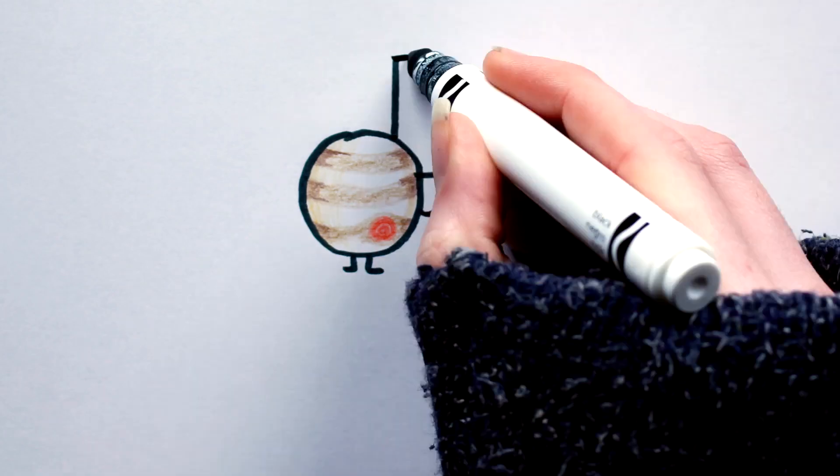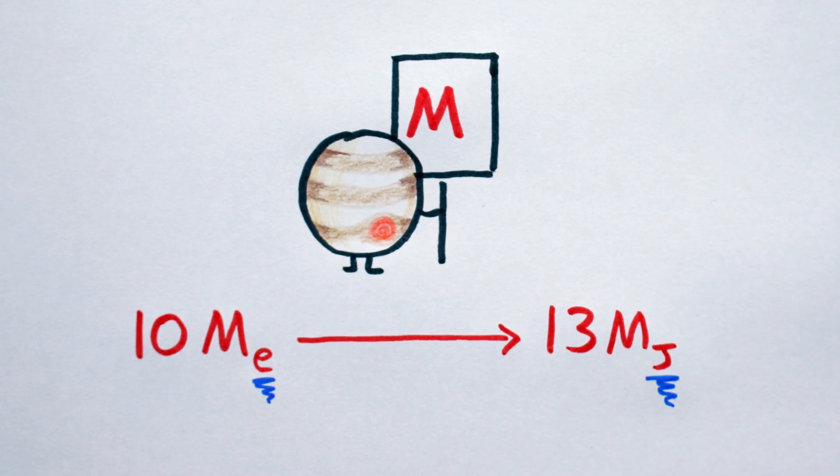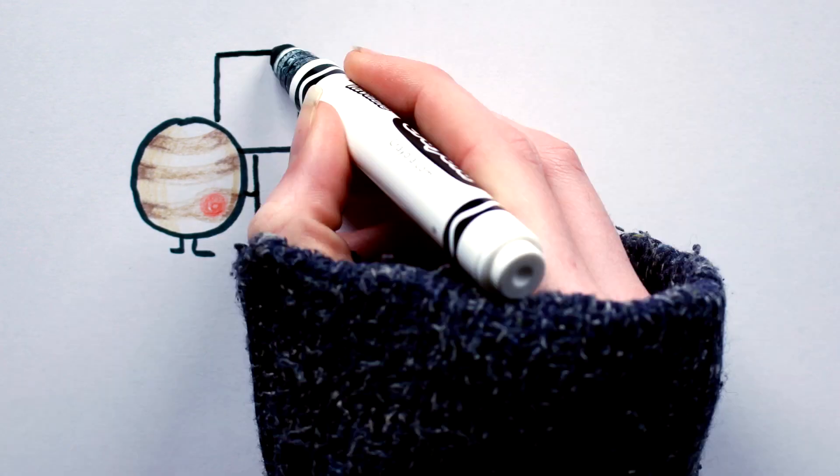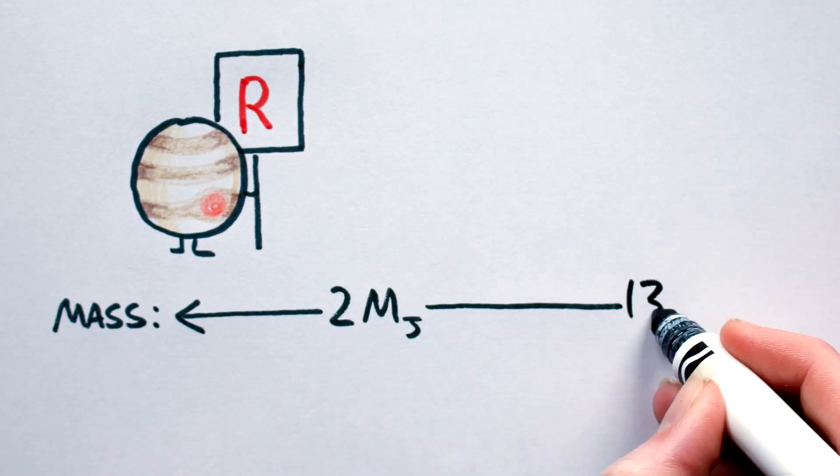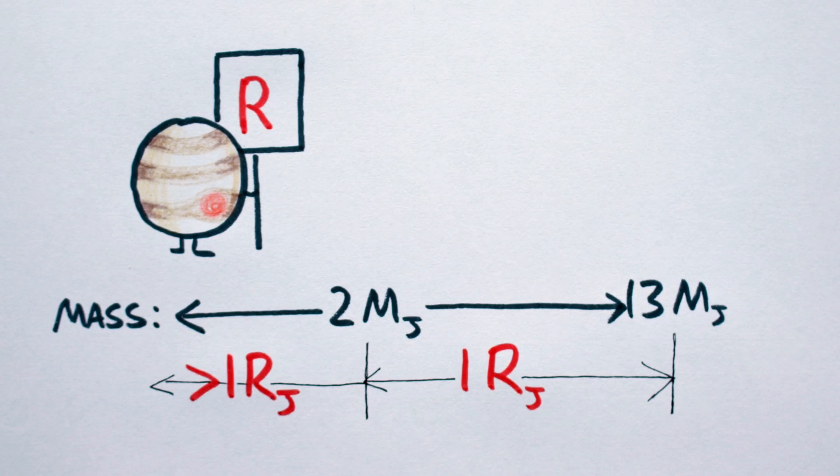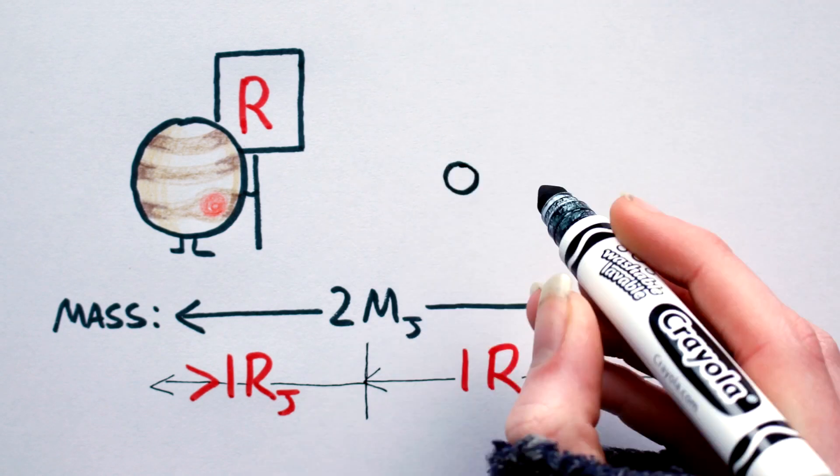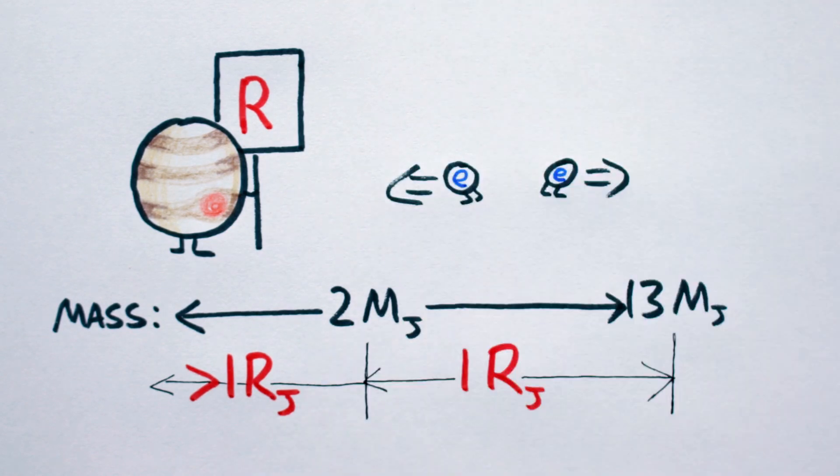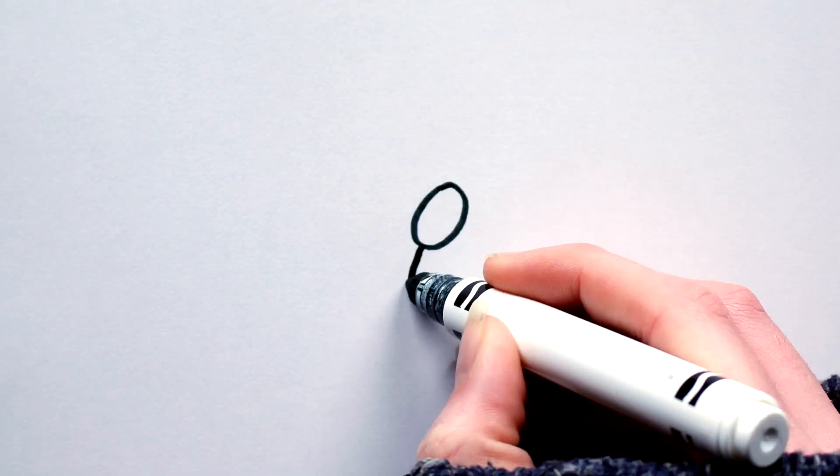The mass range of gas giants is 10 Earth masses to 13 Jupiter masses. Simple. Radius, however, is a little more nuanced. Between 2 and 13 Jupiter masses, a body will always be 1 Jupiter radius in size. Larger radii only occur below 2 Jupiter masses. This is kind of counterintuitive, and you can thank electron degeneracy for that. All these things considered, let's build.